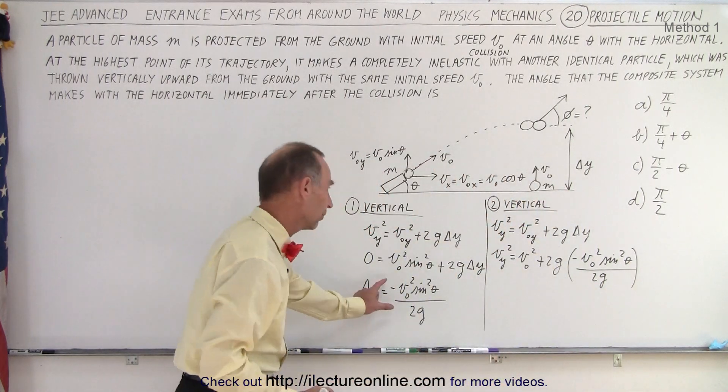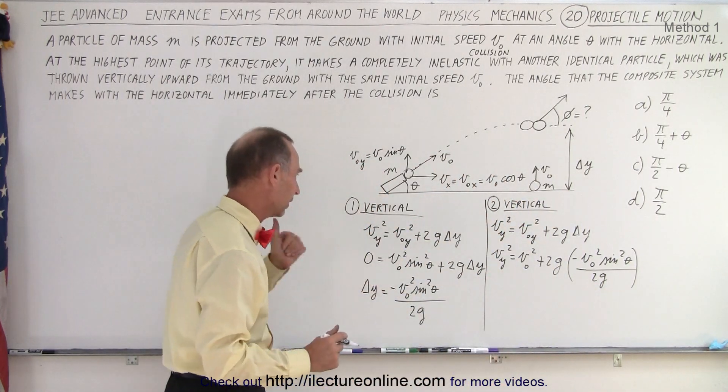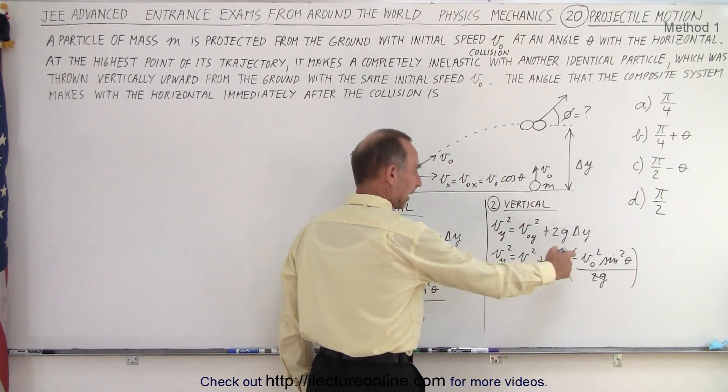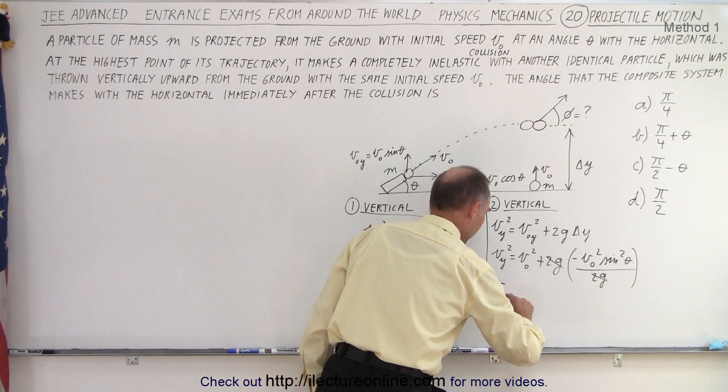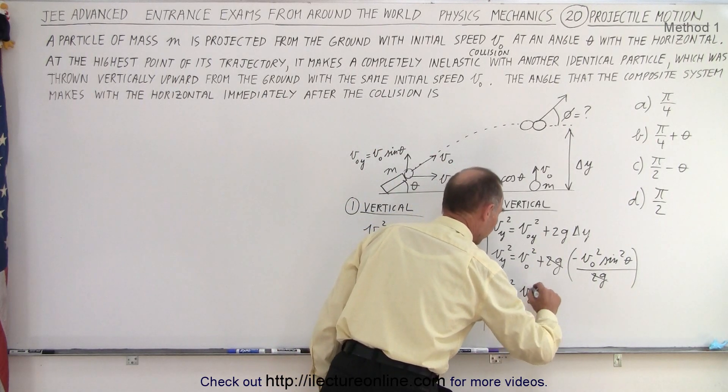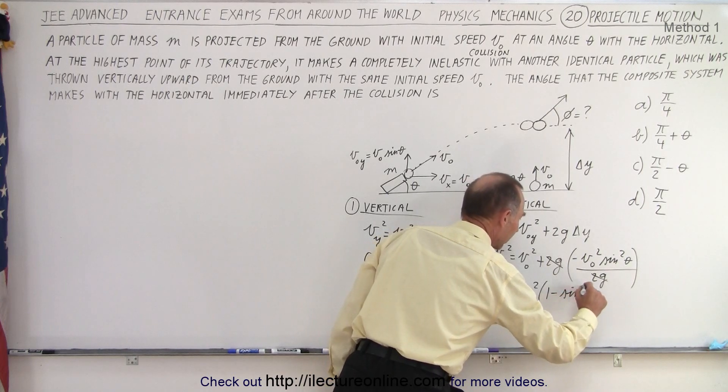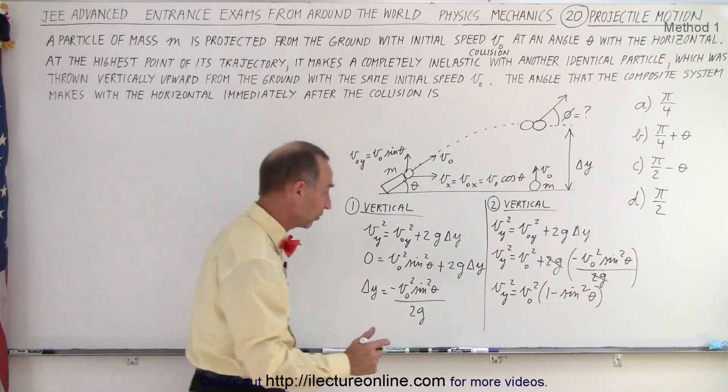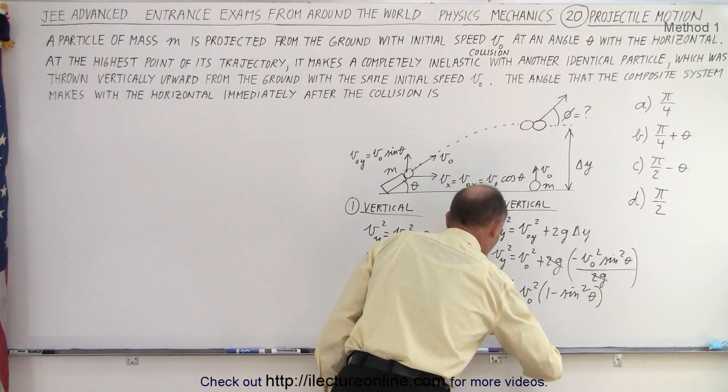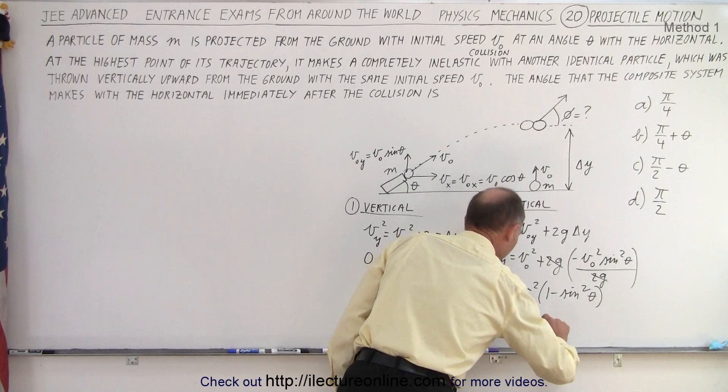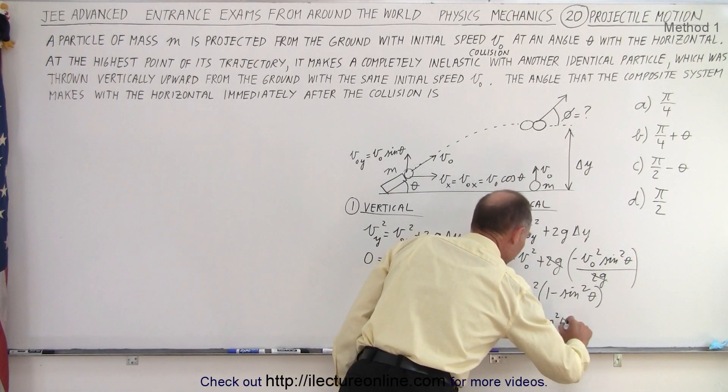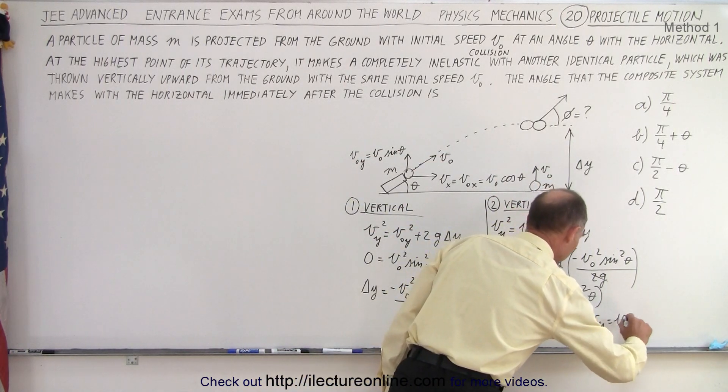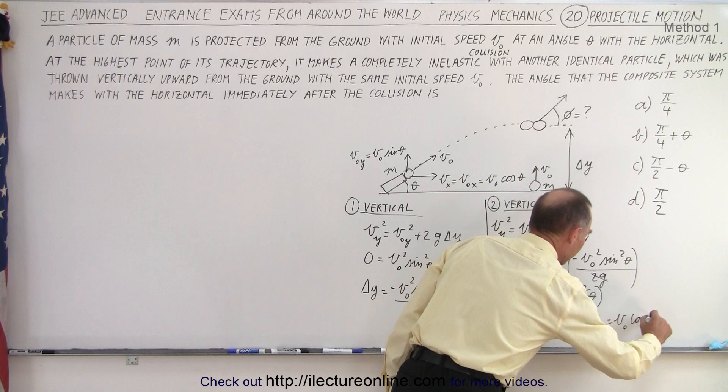And now we can see that the 2g's will cancel. And I can factor out a v initial squared. So I have v y squared is equal to v initial squared times 1 minus the sine squared of theta. And of course 1 minus the sine squared of theta is the cosine squared of theta. So v y squared equals v initial squared times the cosine squared of theta. And then I can take the square root of both sides. And I get v sub y equals v initial times the cosine of theta.